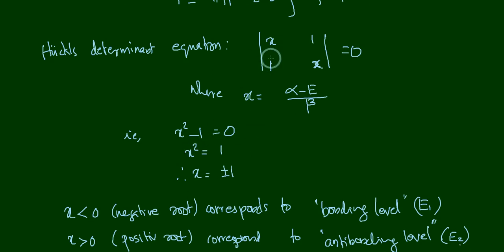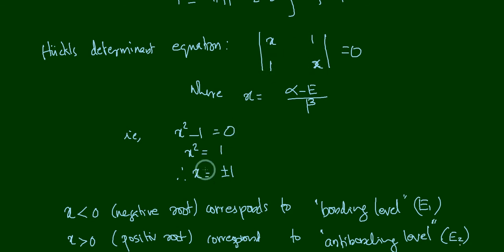Expanding the determinant gives x² − 1 = 0, therefore x² = 1, and the value of x is equal to ±1.